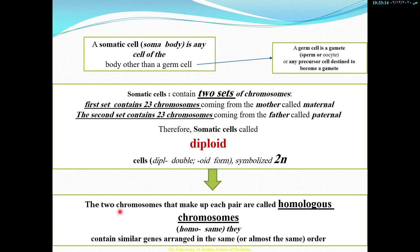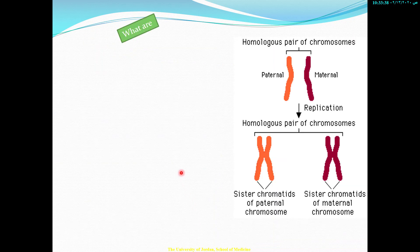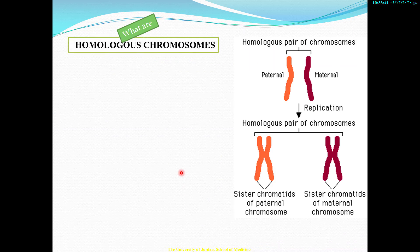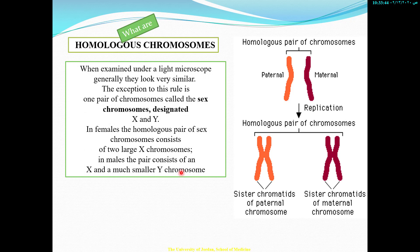The two chromosomes that make up each pair are called homologous chromosomes — homologous means similar. We will talk about them in detail later on. For now, let's agree that they are almost similar. Homologous chromosomes, when examined under a light microscope, generally look very similar. The exception to this rule is one pair of chromosomes called sex chromosomes.